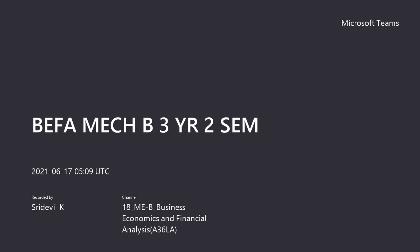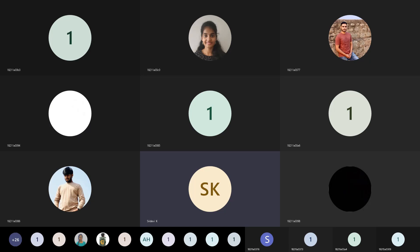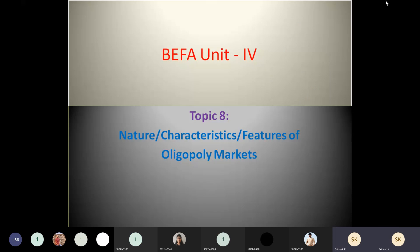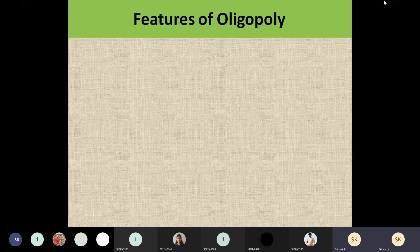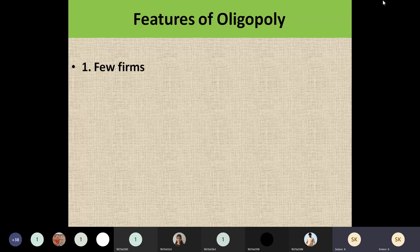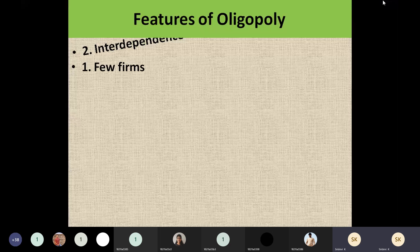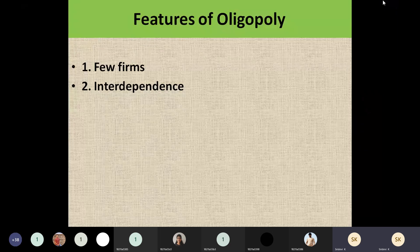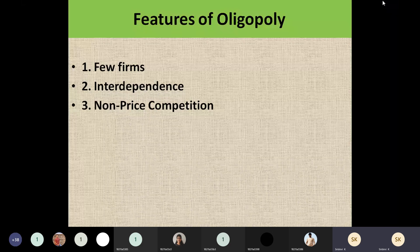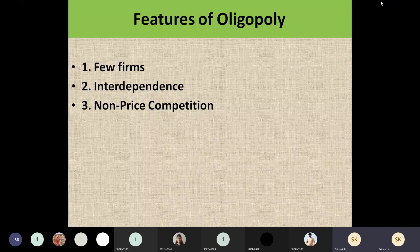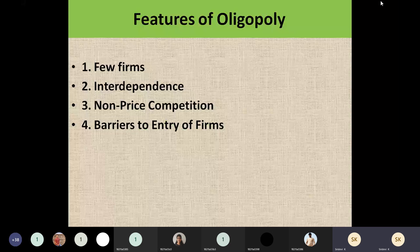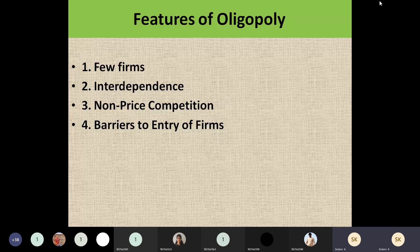We are going to find out the features of oligopoly markets. The first feature is that there will be a few number of sellers — few firms selling the same homogeneous product. They are interdependent, so if one firm brings a change in their product, the other firms will also bring changes to compete. There won't be any price competition among these firms — only product differentiation competition — and there will be barriers to enter these markets.